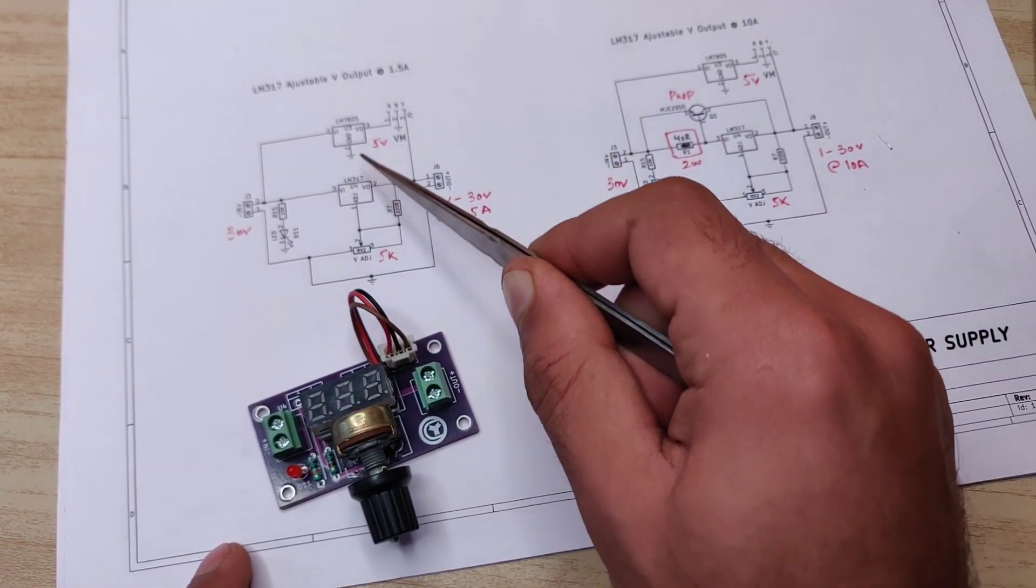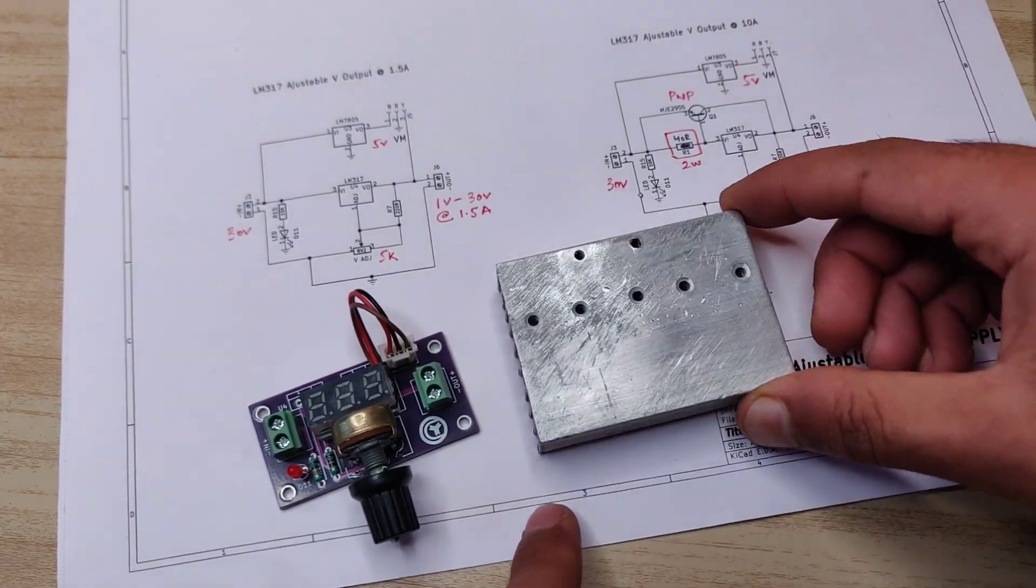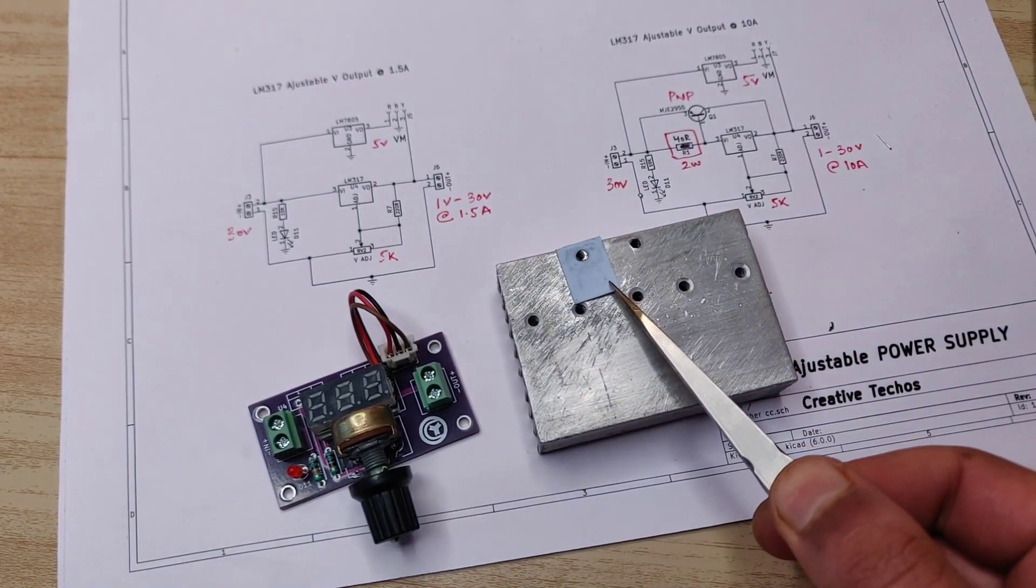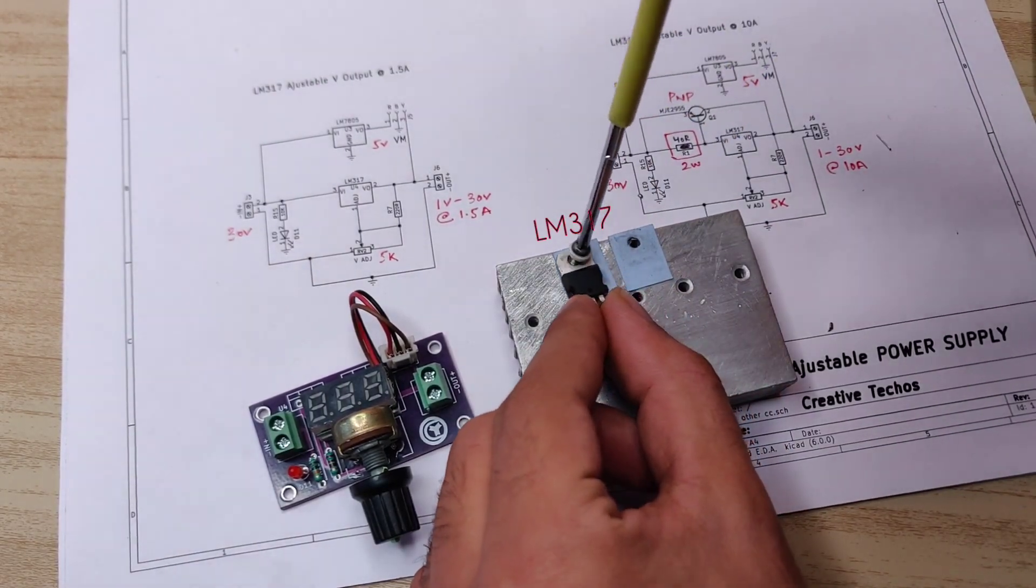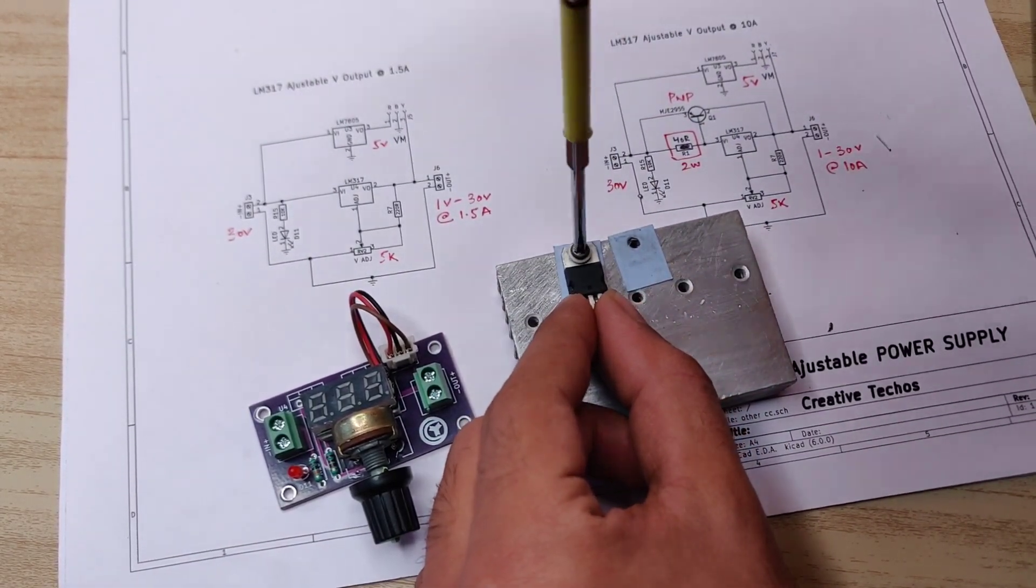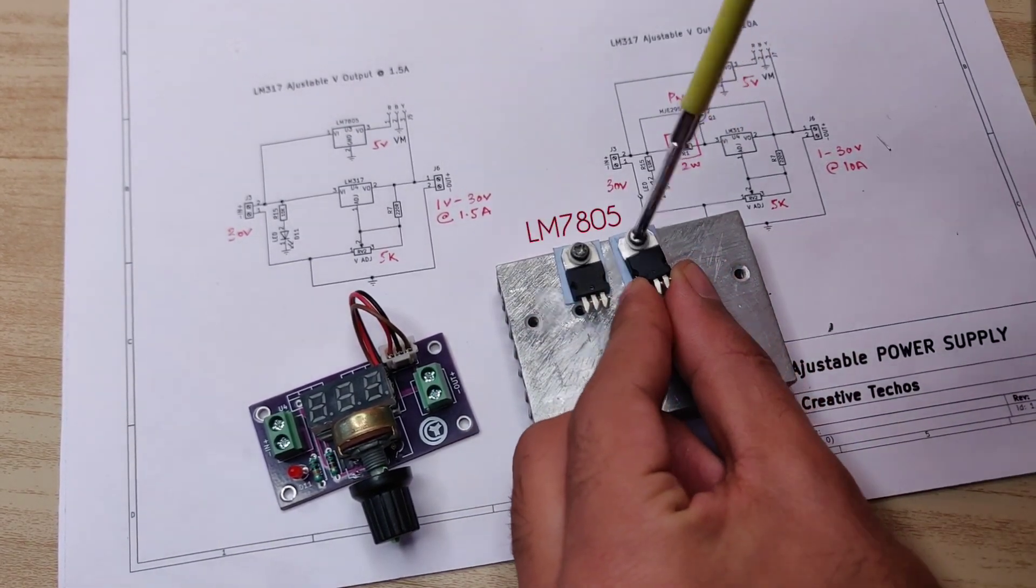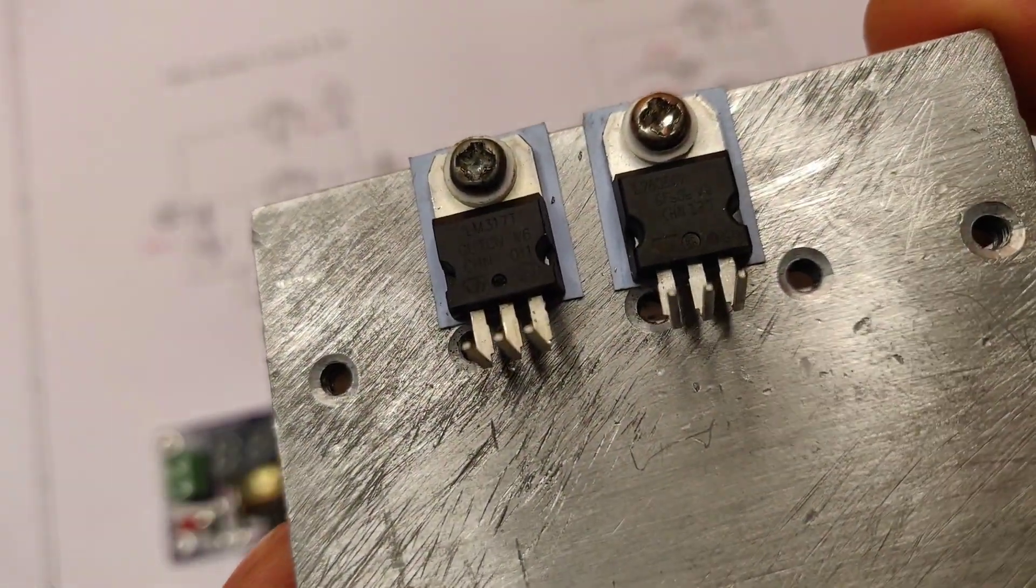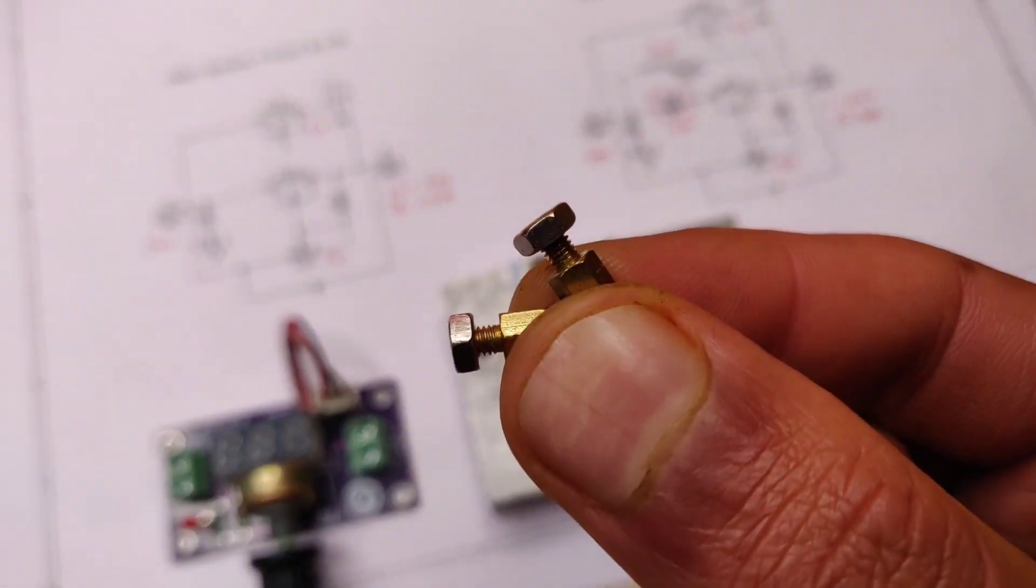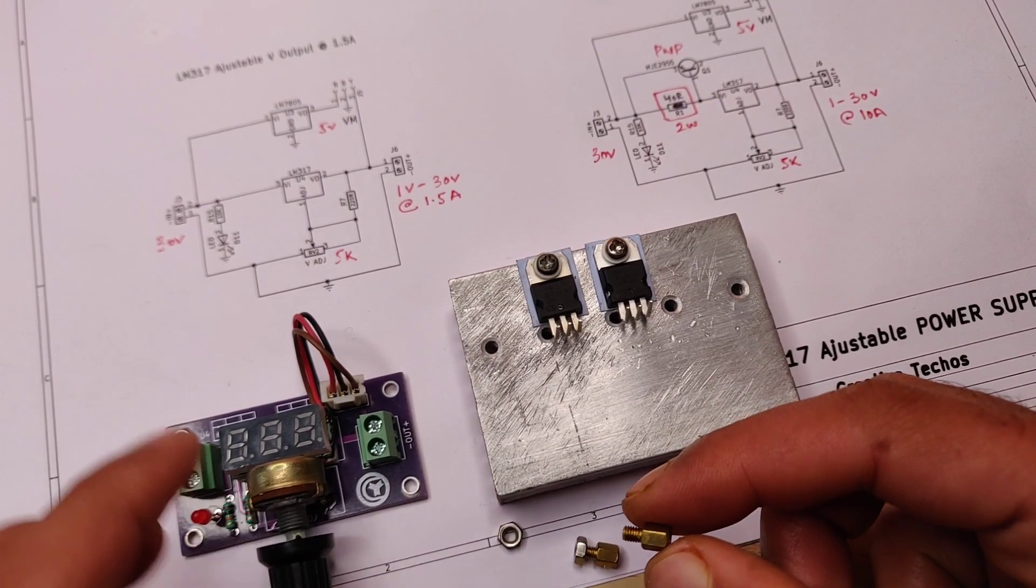Okay, now we still have two components to be soldered in PCB, and that is this LM317 and 7805 regulators. For these we need a good aluminum heatsink. Also use insulation pads so both transistors will not get connected to each other. These type of mounting screws can be used to allow some space between this heatsink and PCB.